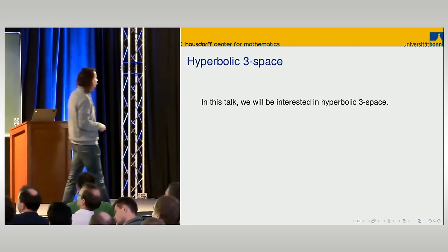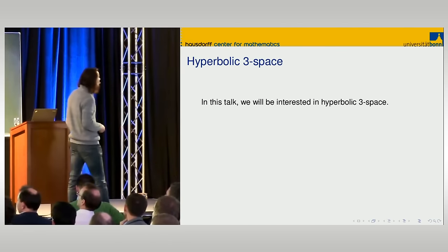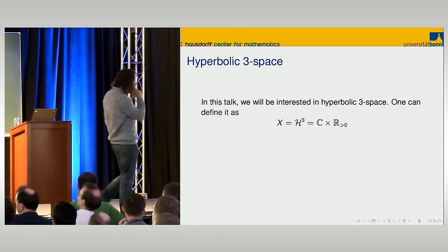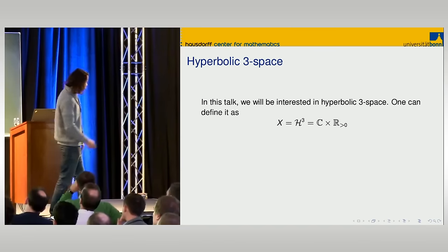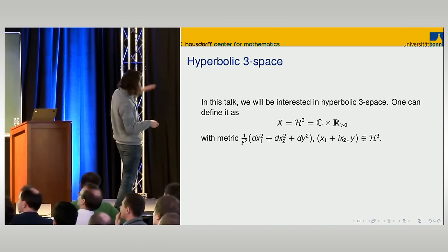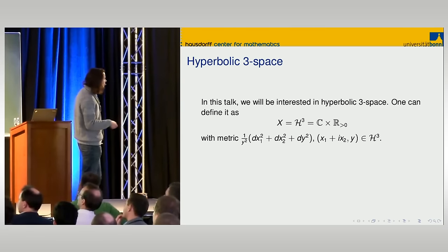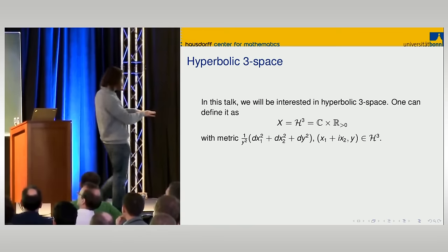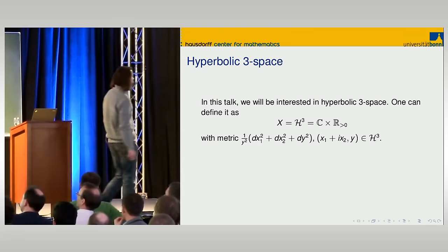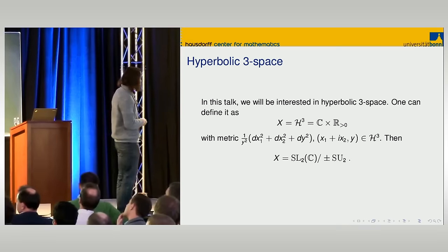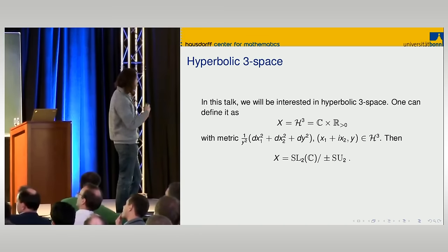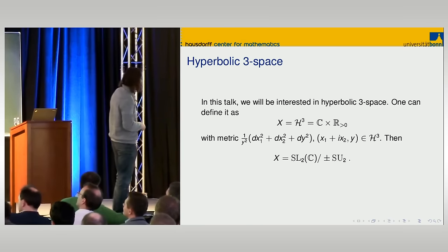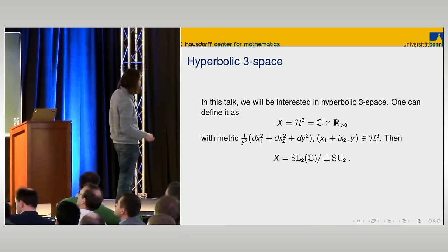I want to step up one dimension and look at hyperbolic 3-space, because there are several phenomena quite different between the two cases. It's a 3-dimensional manifold; you can define it as a product of the complex numbers and the positive reals, with metric one over y-squared with these coordinates. The Lie group of isometries is SL2 of the complex numbers, and the maximum compact subgroup — the stabilizer of a point — is SU2.